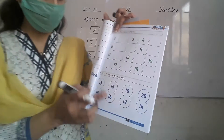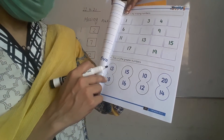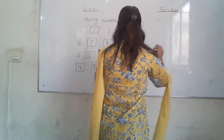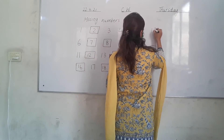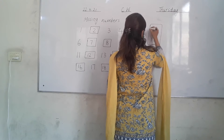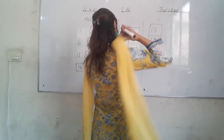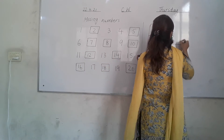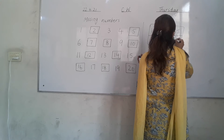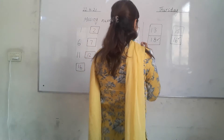Here is the statement: tick the greater number. 18 and 15 — you have to tick the greater number. 15 or 16? You have to take 16. 16 is the greater number. 18.